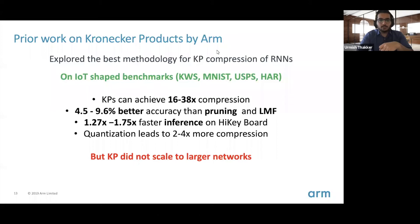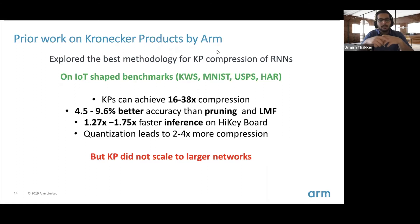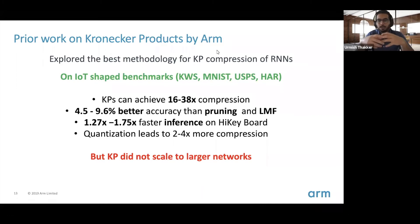We had already explored Kronecker products for neural network compression. The highlights of that work: we achieved large compression factors, outperforming traditional techniques like pruning and factorization, getting good inference runtime speedups, and being orthogonal to quantization. But we struggled to make this technique more widespread. We realized that structured matrix compression techniques, while promising with 16–38x compression, are only useful for certain niche applications and generally don't generalize well, which limits their widespread adoption — unlike pruning, which can be applied to any network.